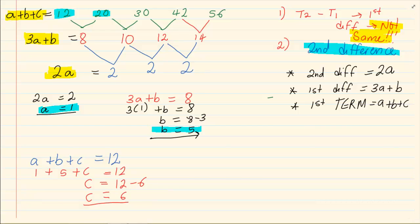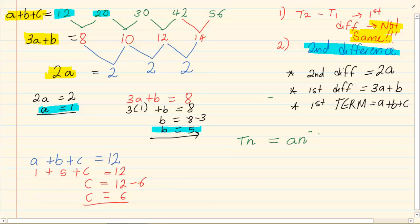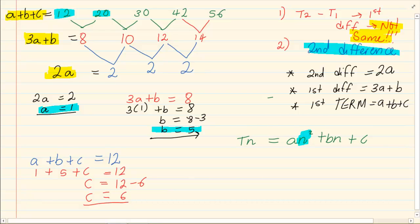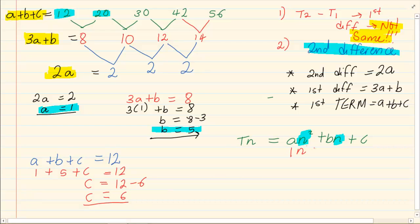Now how do you write the formula? The formula for a second difference is exactly like a quadratic equation: tn equals an squared plus bn plus c, with descending powers — n squared, then n, then no n. Just like ax squared plus bx plus c, it looks like a trinomial. Substituting our values: a is 1, b is 5, c is 6, so tn equals n squared plus 5n plus 6. Thank you for watching.